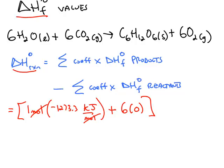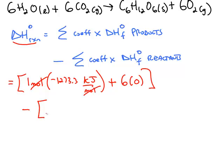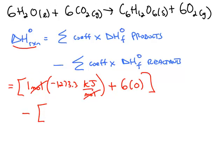So those are all of the products, and then we're going to subtract the same kind of calculation using the reactants. Six moles of water, six times negative 285.8. And you have to be careful to choose the right value for the right phase. H2O liquid has a different value than H2O steam.